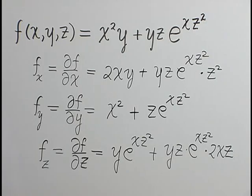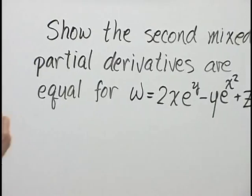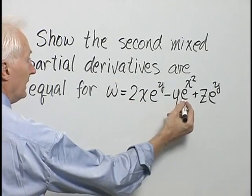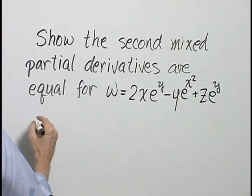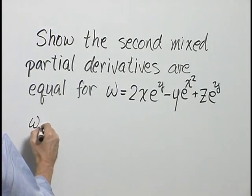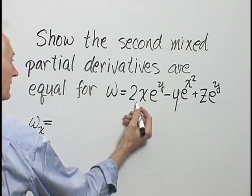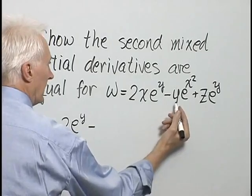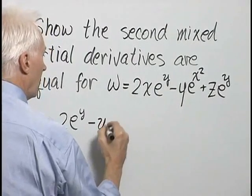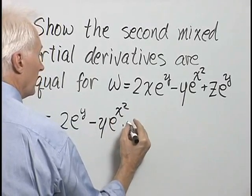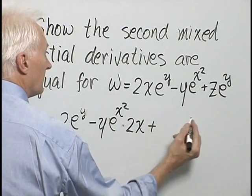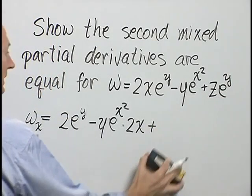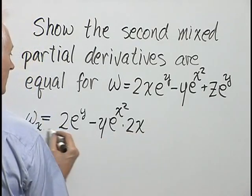Now let's look at higher partial derivatives. We want to show the second mixed partial derivatives are equal for w = 2xe^y − ye^(x²) + ze^y. Starting with ∂w/∂x: the derivative of 2xe^y is 2e^y (y is constant); the derivative of −ye^(x²) is −y · e^(x²) · 2x; and ze^y has no x so its derivative is zero.